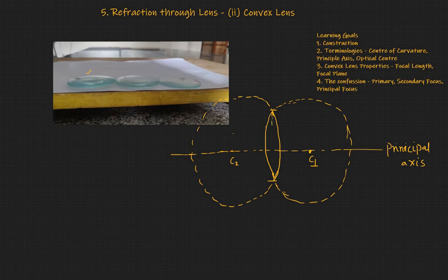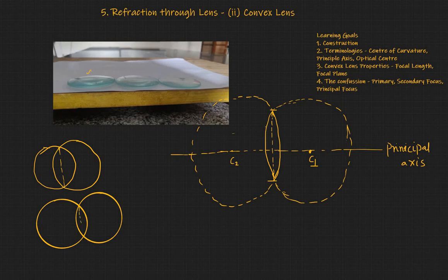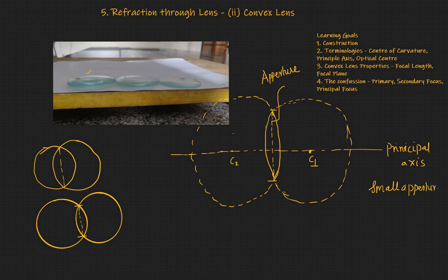Depending upon where these spheres meet, the height may vary. You can imagine two spheres meeting to form a large intersection, or they could meet to form a much smaller intersection. This length is called the aperture. In most lenses, these apertures are very small, so we usually study small aperture lenses.